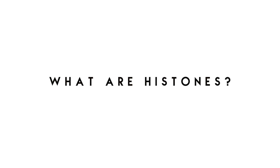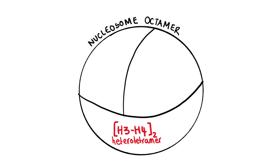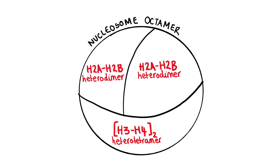So what are histone proteins? We basically have five histone proteins: H1, H2A, H2B, H3, and H4. But only four of those five go on to form the nucleosome. A nucleosome is the basic unit of chromatin, built in a highly regulated manner. We take a heterotetramer composed of two H3s and two H4s, then two heterodimers of H2A and H2B.